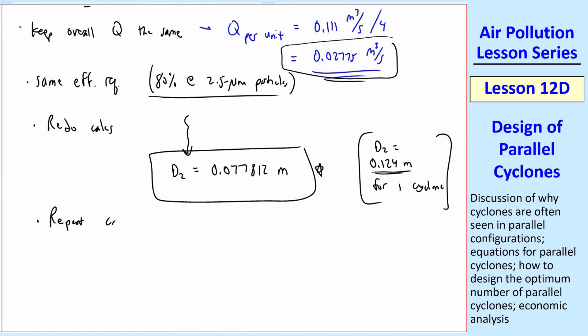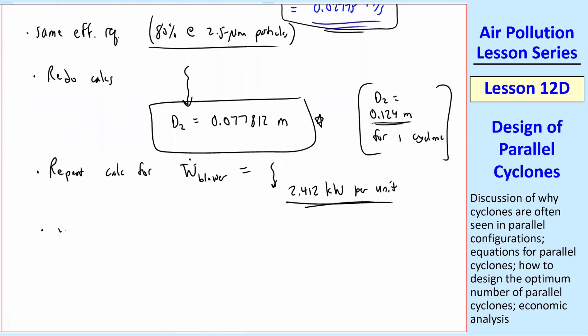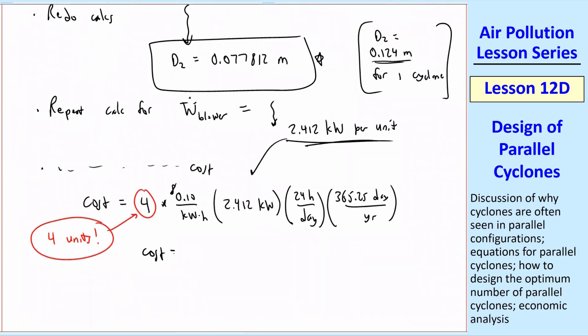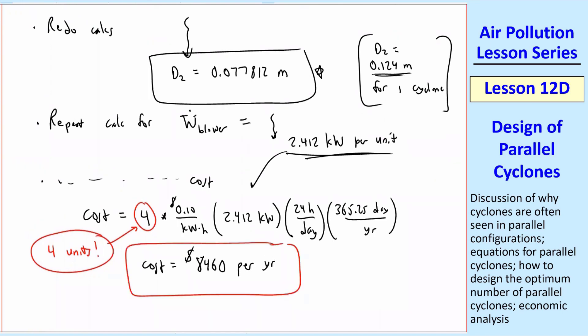Okay, now we repeat the calculations for W dot of the blower. And if you work through the algebra yourself, I get 2.412 kilowatt per unit. And we repeat the calculation for the cost. My cost, be careful, is four. And that's because there's four units. So my cost is going to multiply by four times the same thing I did before, then 10 cents per kilowatt hour. And then we plug in the rest of it. Now we're going to plug in this power, 2.412 kilowatts, and then our conversions. And so I get the cost here when I multiply by that four is $8,460 per year. This is for these four in parallel. We've already taken into account that there's four of them. So this is the total electric cost.